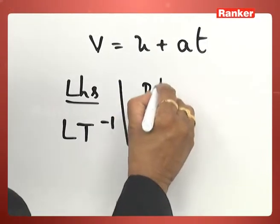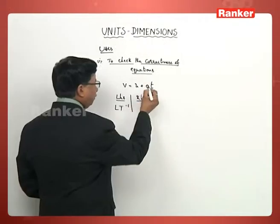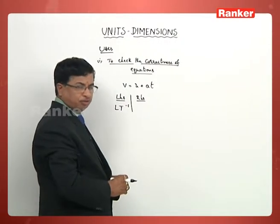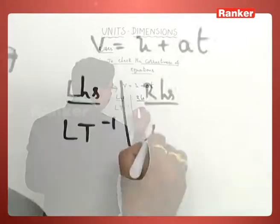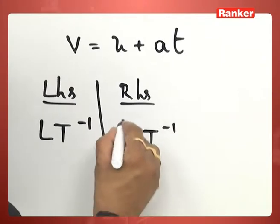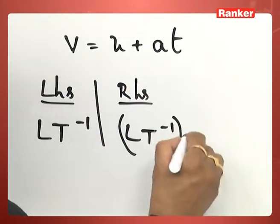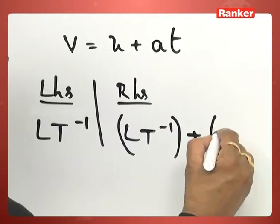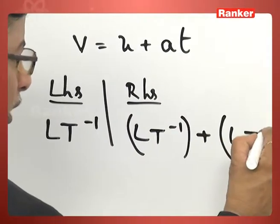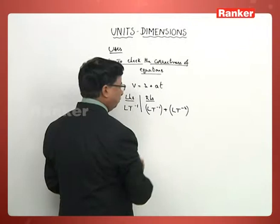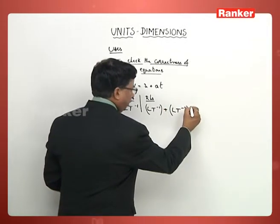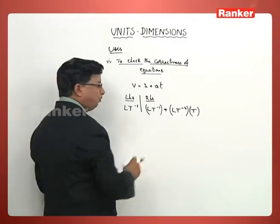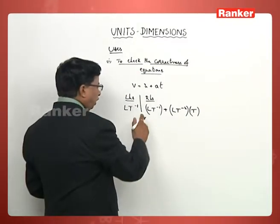Similarly, let us write the dimensions of the quantities on the right-hand side of the equation. U has dimensional formula L T⁻¹. For acceleration a, it is L T⁻², and T is the time taken, so we write it as T. Therefore the dimensional formula of the RHS can be written out.